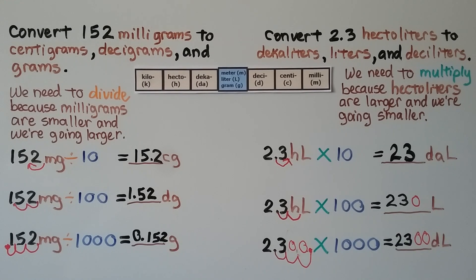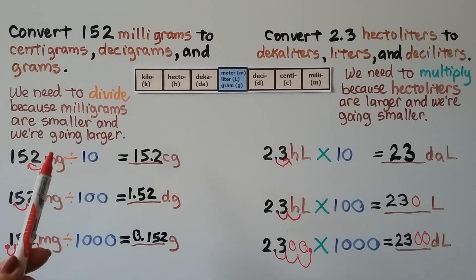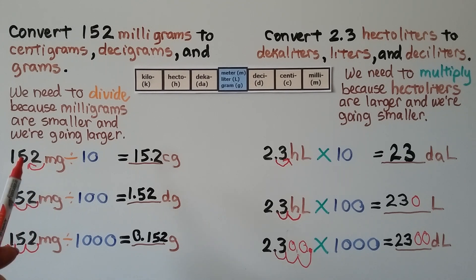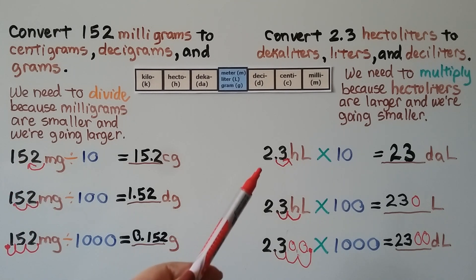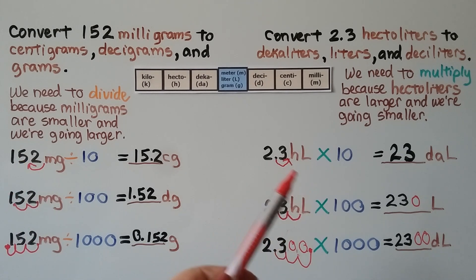Remember: when you're dividing by powers of 10, you move the decimal point to the left. And when you're multiplying, you move it to the right.